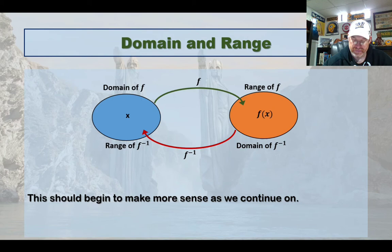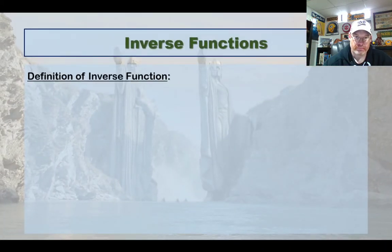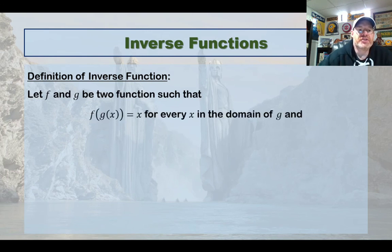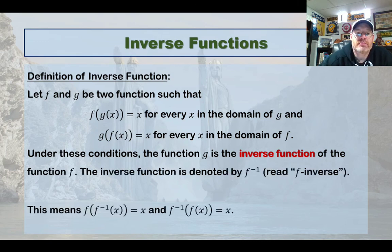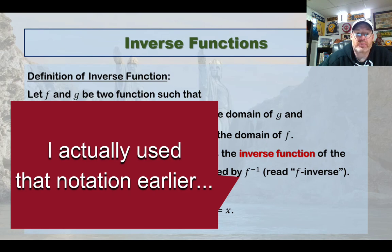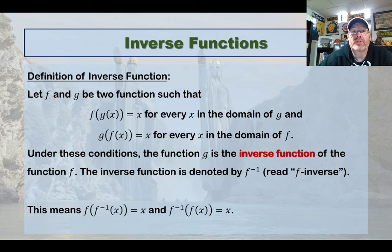And here is the formal definition. Let f and g be two functions such that f(g(x)) equals x for every x in the domain of g, and g(f(x)) equals x for every x in the domain of f. Under these conditions, the function g is the inverse function of the function f. And the notation is that f with the negative one superscript to it, it's read f inverse. So what that means is if you take f(f inverse), you get x. If you switch it around and you take f inverse of f, you also get x. Again, this will make more sense as we go through this.